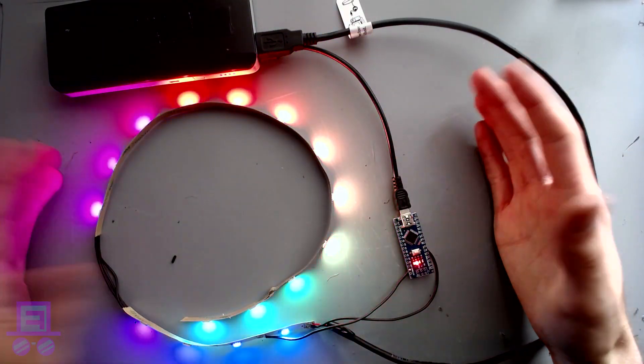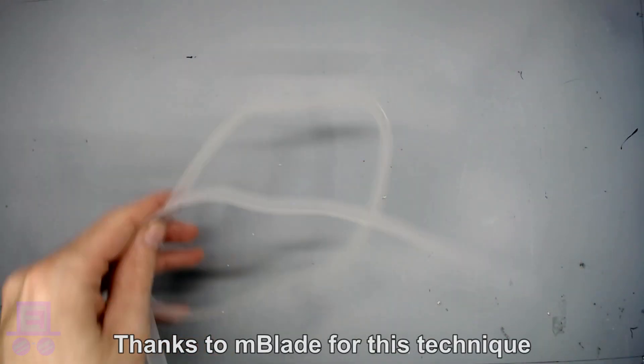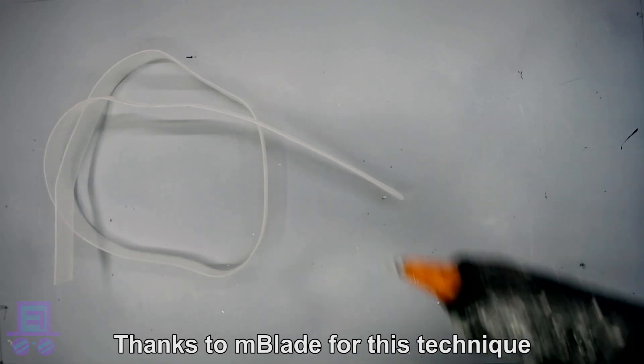Now before we install these into a fursuit, we need to protect them from moisture. We can do this by using clear 10mm heat shrink and some hot glue.